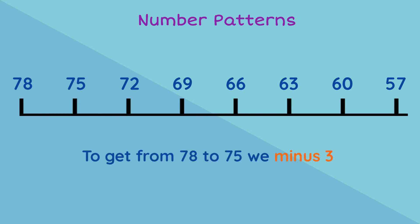Well, to get from 78 to 75, we minus 3. To get from 75 to 72, we minus 3 again. So now we know that the pattern was formed by subtracting 3. Well done!